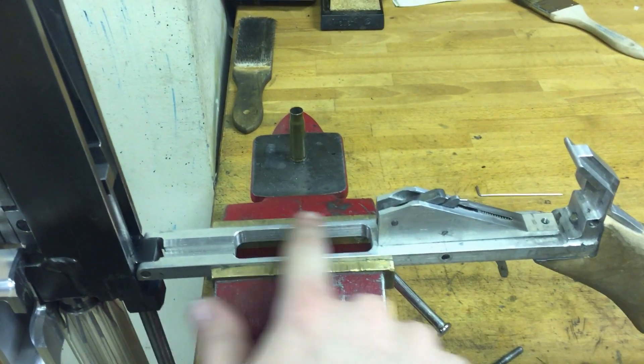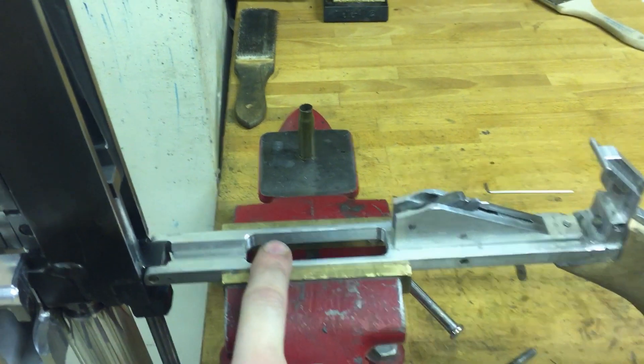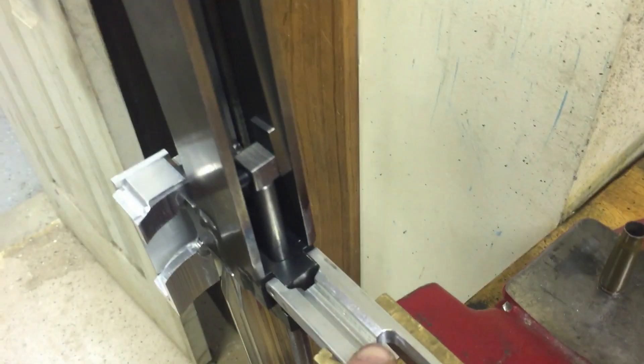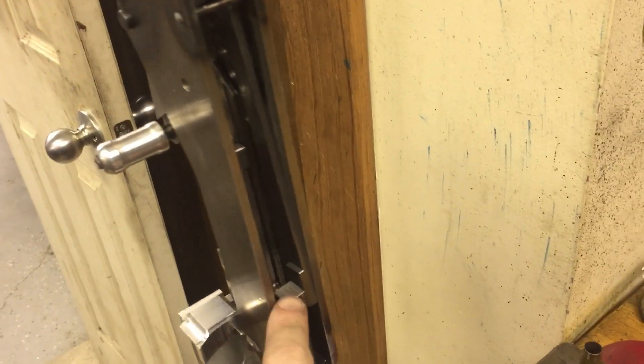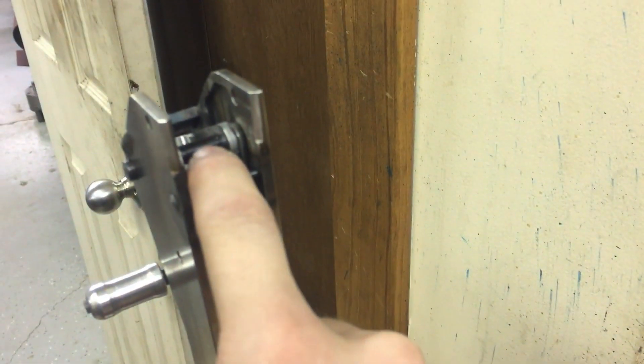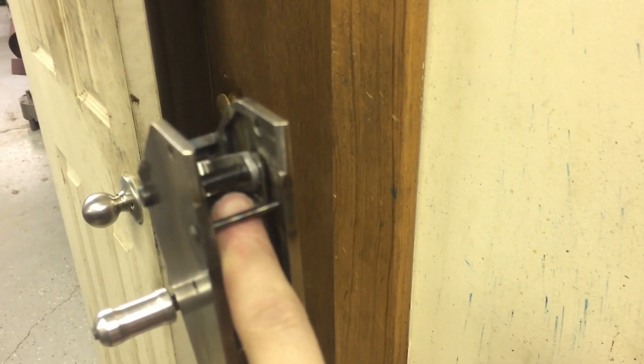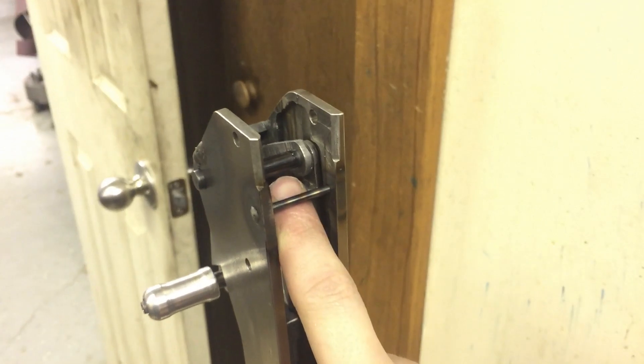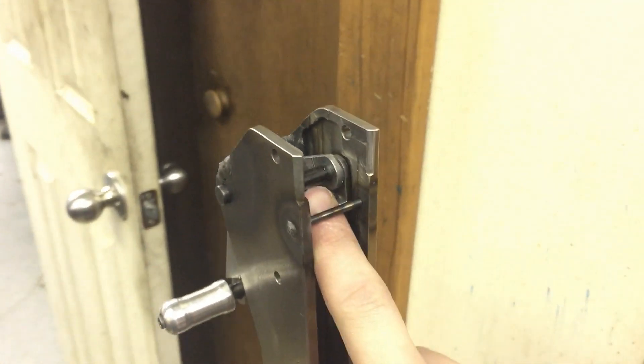This big hole right here is your ejection port. It ejects out the bottom. As far as through here, there's kind of a whole lot of stuff going on. This is the bolt in here. This is the bottom of the toggle.